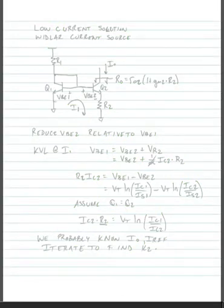So we discussed the desire to produce a really small output current. Here's our low current solution. If we'd like our output current to be very small, especially compared to our input current, we're going to use what's called a Widlar current source.